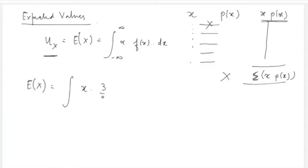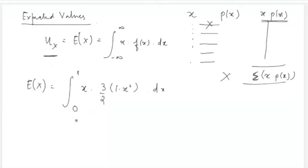You plug in the lower limit 0 and upper limit 1 and solve the integral to get the expected value of the random variable.